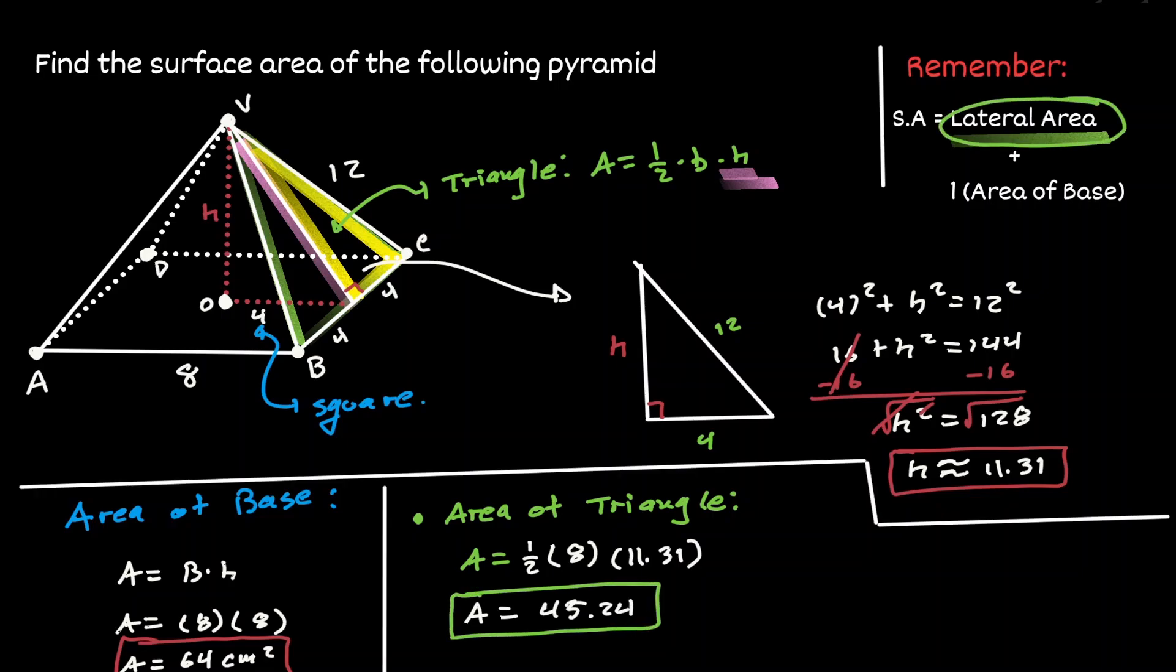Now that we know the area of one of those triangles, now we can define the lateral area. Notice that there are four triangles on the side of this pyramid, so we can get the area of one triangle multiplied by four and we'll define the lateral area. Which is 180.96.